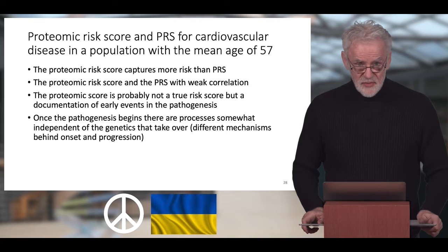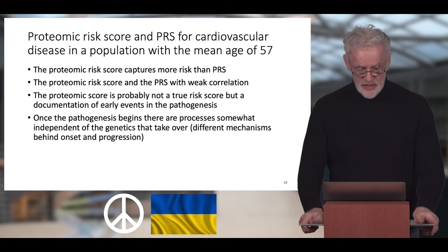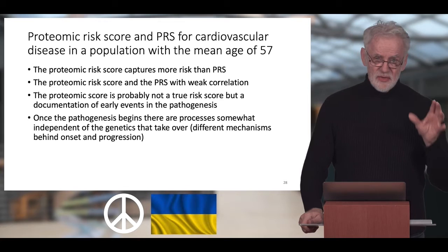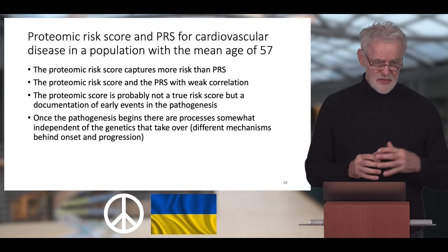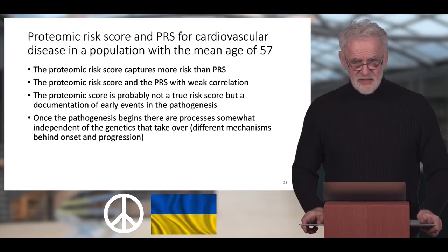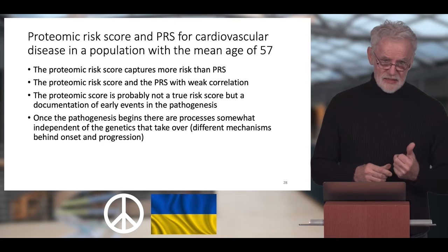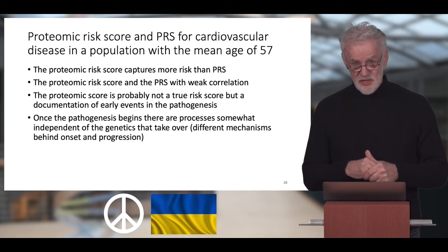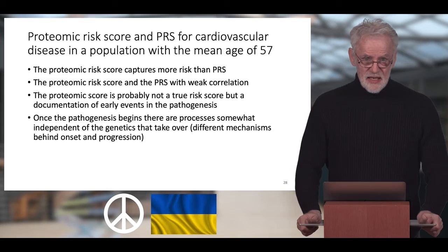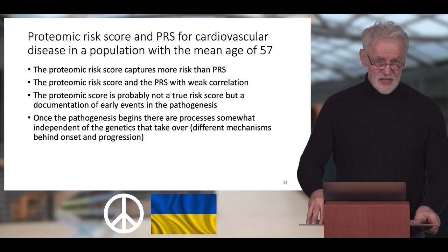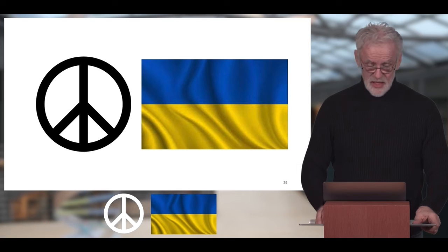What makes this particularly interesting is not just that the proteomic score captures much more risk, but also that there was very little correlation between the proteomic score and the polygenic risk score. What you are probably looking at in the proteomic risk score is not a true risk score — you are probably documenting the early events in the pathogenesis of the disease. Once pathogenesis begins, there appear to be processes that take over that are somewhat independent of genetics. We have examples from cardiovascular disease and Alzheimer's disease suggesting the basic mechanisms behind disease onset can be almost completely separated from the processes that lead to progression.